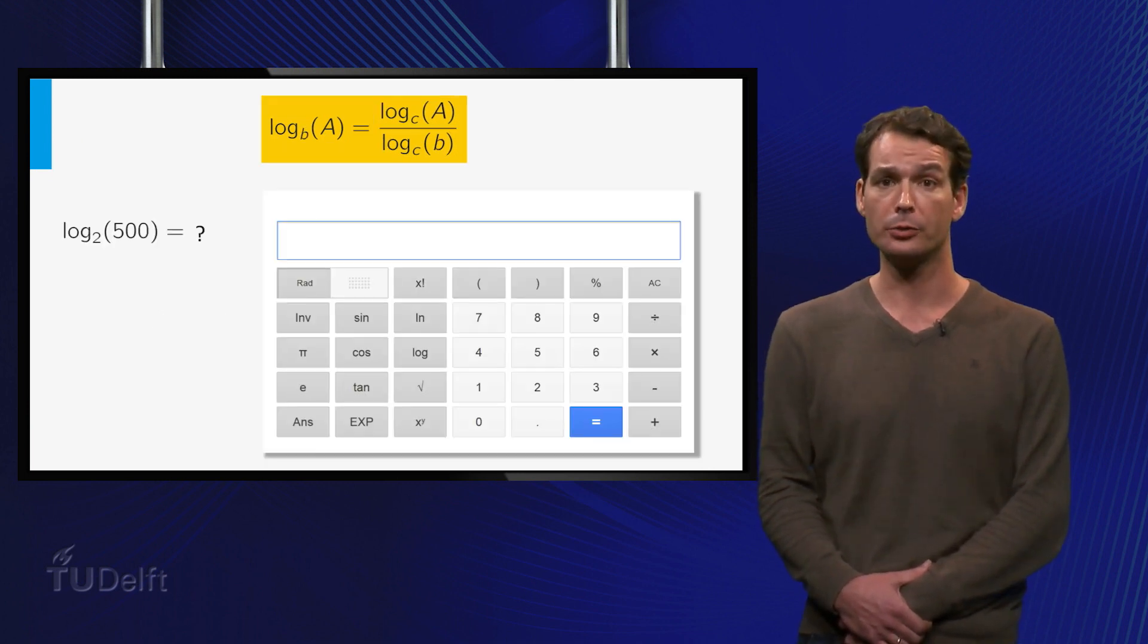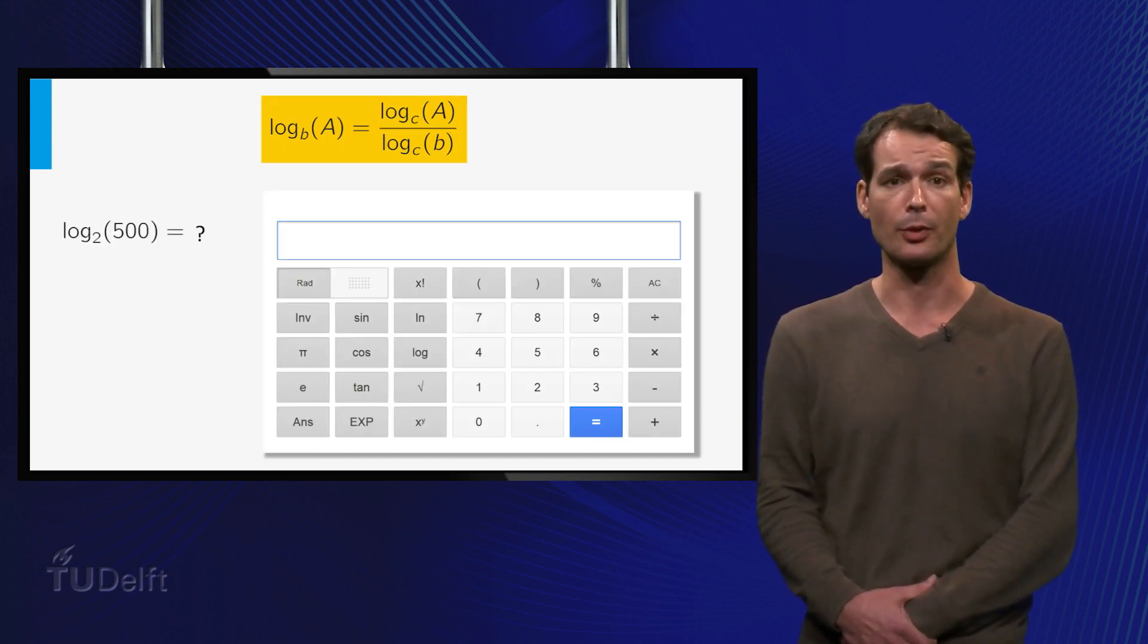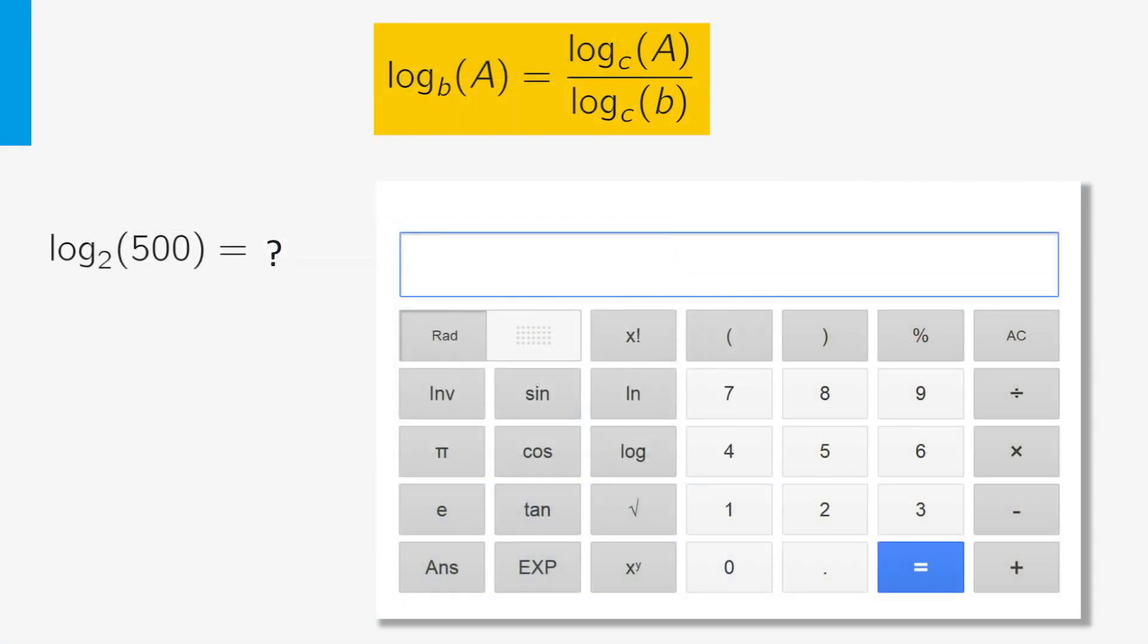The change of base formula is very useful for calculating logarithms on a simple calculator. Suppose you want to calculate log base 2 of 500. On your calculator you see a button log for the logarithm in base 10. From the change of base formula it follows that log base 2 of 500 is equal to log 500 divided by log 2. The result on your calculator is then 8.96. If you use the natural logarithm instead you find the same result.